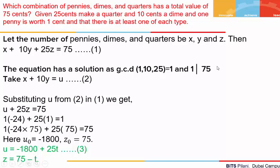Let us translate the problem into a mathematical equation. Let the number of pennies, dimes and quarters be x, y and z. Then the equation we form is x + 10y + 25z = 75. The number of pennies is x and 1 penny equals 1 cent, so the total cents they make is x. Each dime is 10 cents and number of dimes is y, so the total cents are 10y. Each quarter is 25 cents and number of quarters is z, so the total cents are 25z.